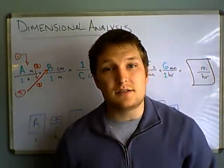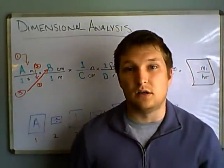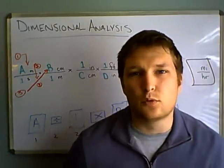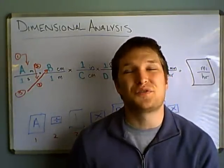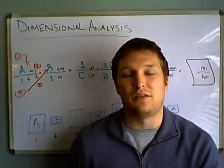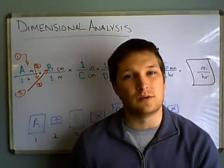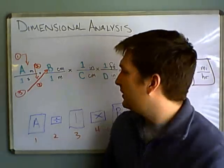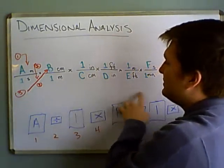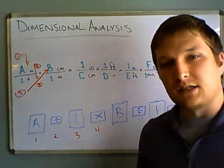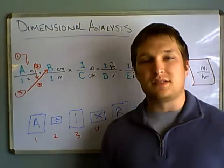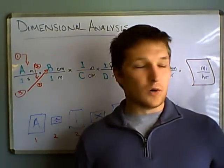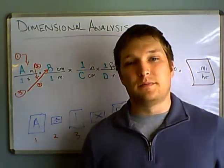And conveniently, since this is all multiplication and division, then the rules for significant figures with multiplication and division are really simple. You just find whichever one of these has the least amount of significant digits. And that's the number of significant figures your final answer has to have.